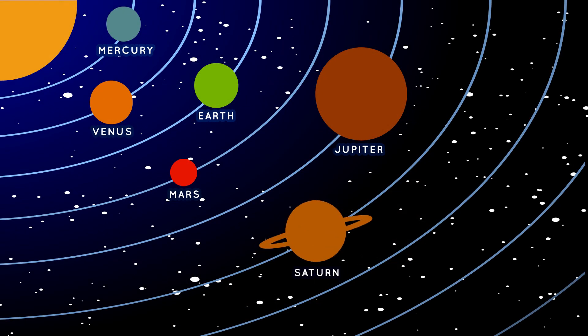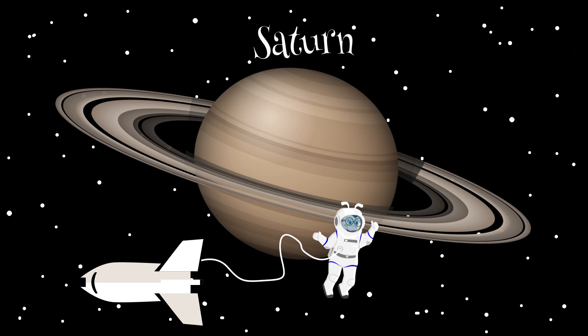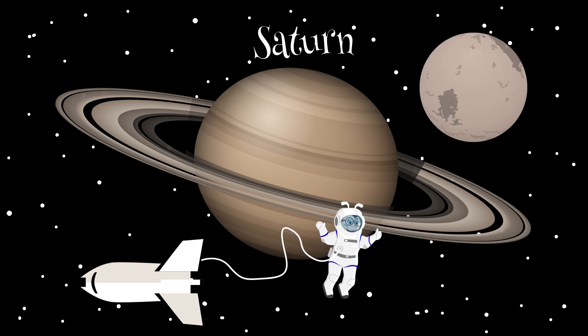Saturn is the sixth planet from the sun and the second largest planet in our solar system. Saturn has nine rings that circle the planet and over 60 moons that circle the planet, including a very large moon called Titan that is even larger than the planet Mercury.